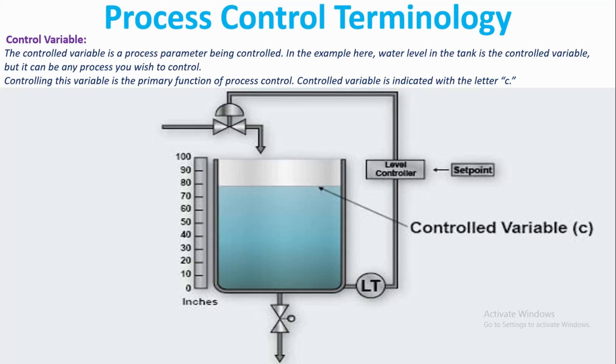But it can be any process you wish to control. Controlling this variable is the primary function of process control. Controlled variable is indicated with the letter C.